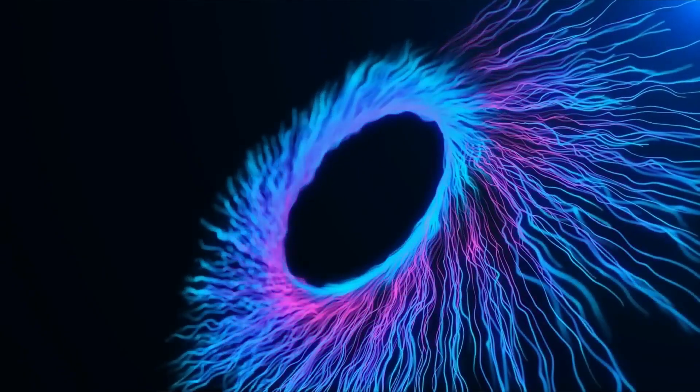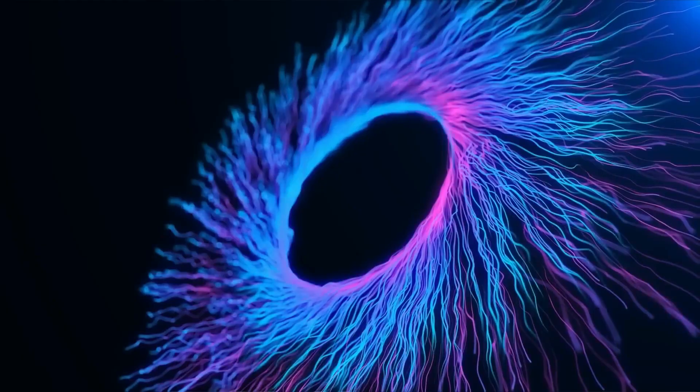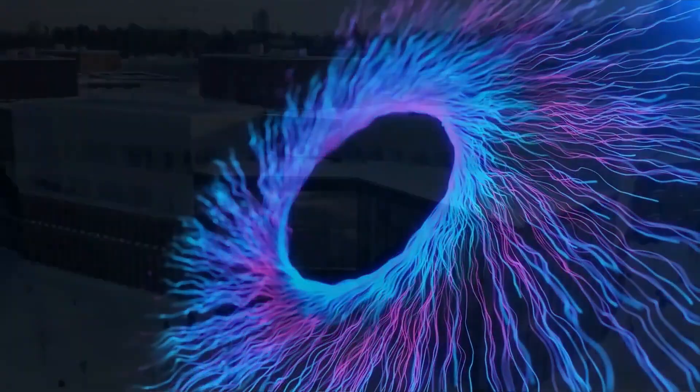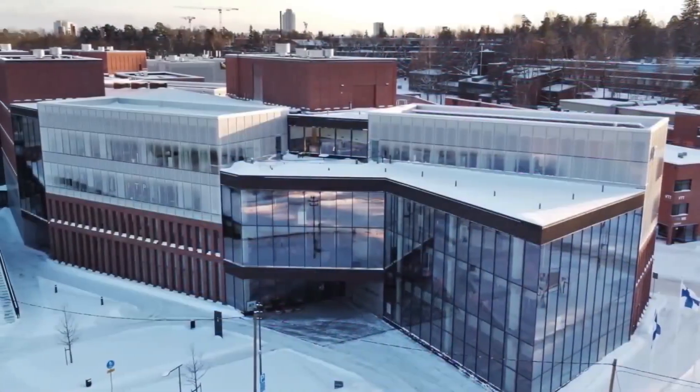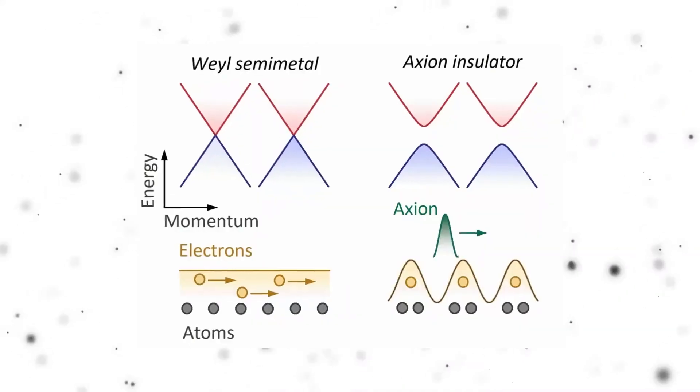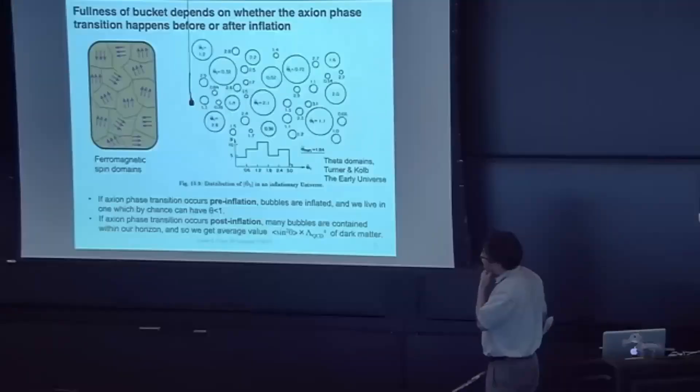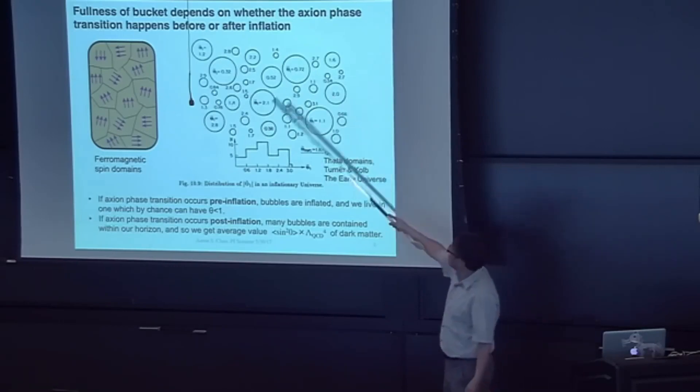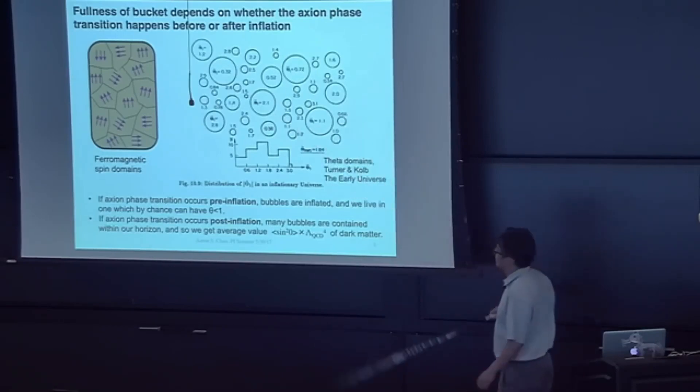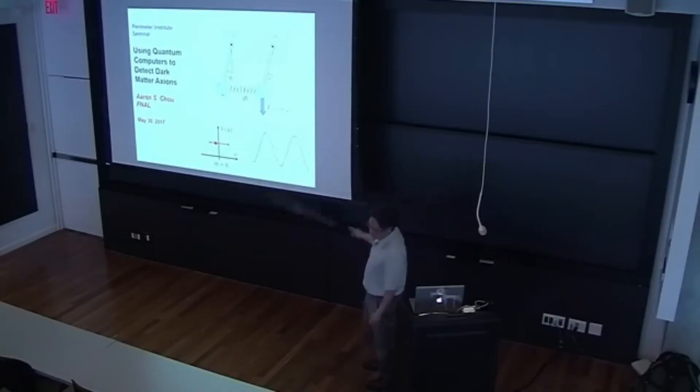At Fermilab, scientists are using quantum sensors to push the limits of precision. By leveraging the power of superconducting qubits, they've created ultra-sensitive detectors. Cutting-edge experiments in quantum computing may have taken the first steps toward detecting axions, hypothetical particles believed to make up dark matter.